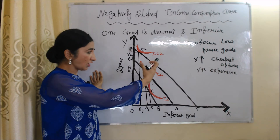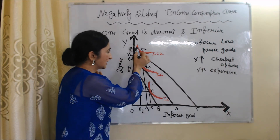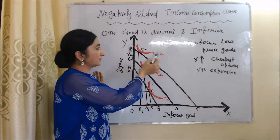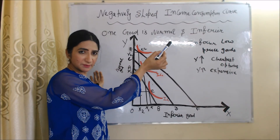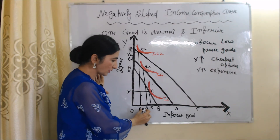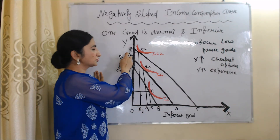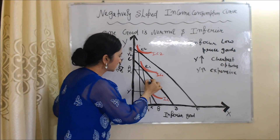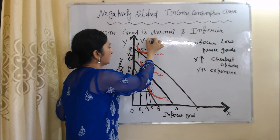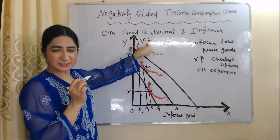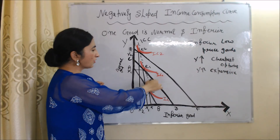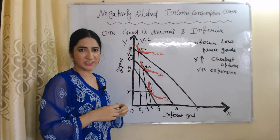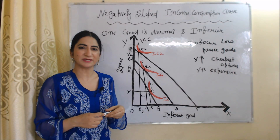Now suppose income increases again. The budget line shifts outward from CD to EF. EF is the new budget line, IC2 is the new indifference curve, and E2 is the new consumer equilibrium point. At this point, the consumer is buying OX2 quantities of inferior good and OY2 quantities of normal good. When we join all the equilibrium points, we get our ICC — the income consumption curve. You can see the slope is negative, so it is called a negatively sloped income consumption curve.